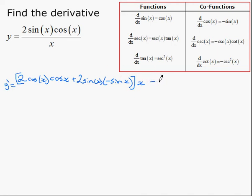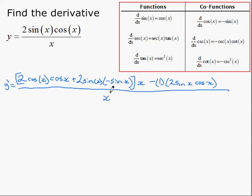minus the derivative of the bottom, which is 1, multiplied by the top left the same. So 2 sine x cos x. And all of that needs to be divided by the denominator squared, so divided by x squared.